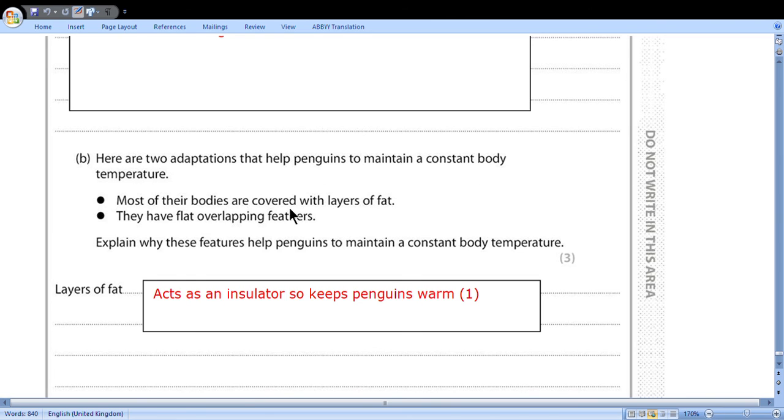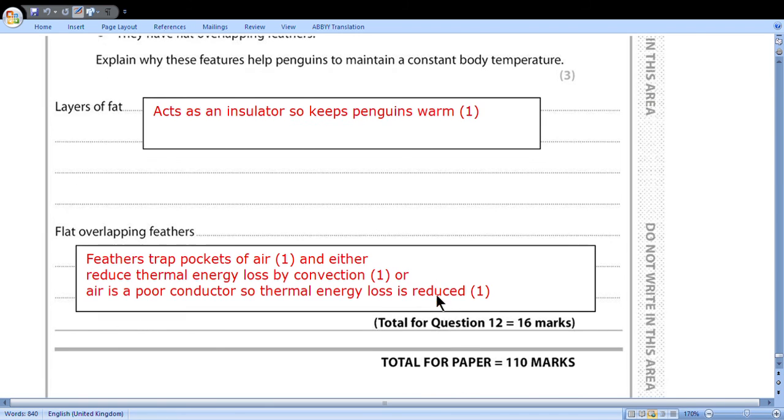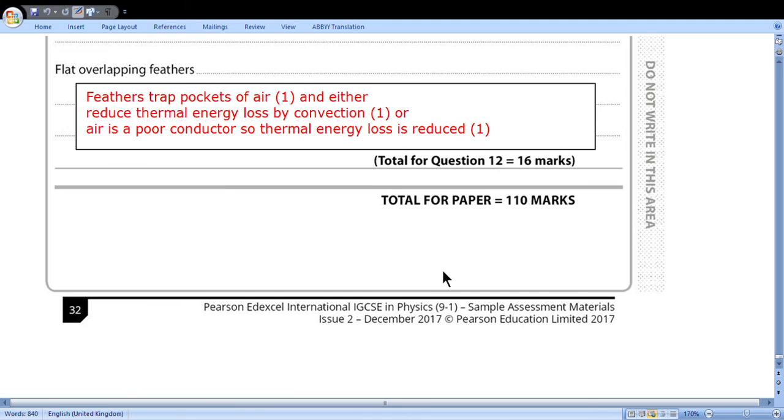Here are two adaptations that help penguins to maintain a constant body temperature. Most of their bodies are covered with layers of fat. They have flat overlapping feathers. Explain why these features help penguins to maintain a constant body temperature. Layers of fat act as an insulator to keep the penguin warm. Flat overlapping feathers trap pockets of air and either reduce thermal energy loss by convection or air is a poor conductor so energy loss is reduced. Paper is over. Thank you for your attention.